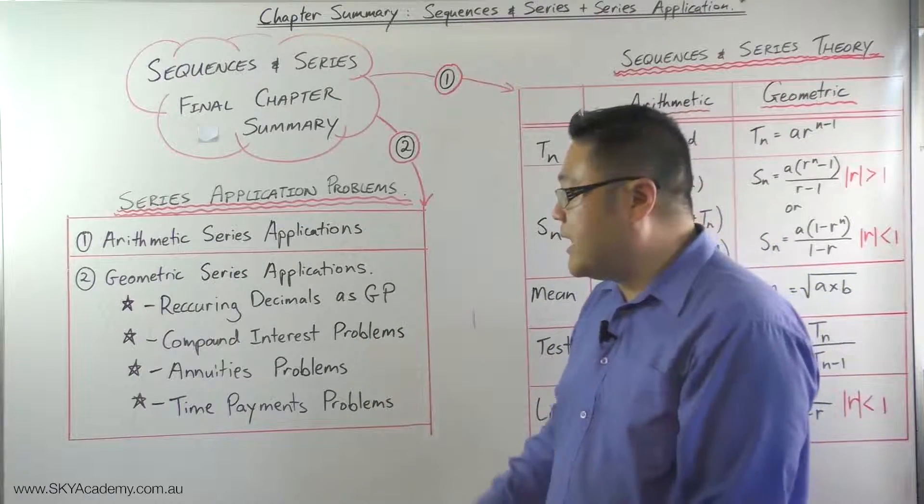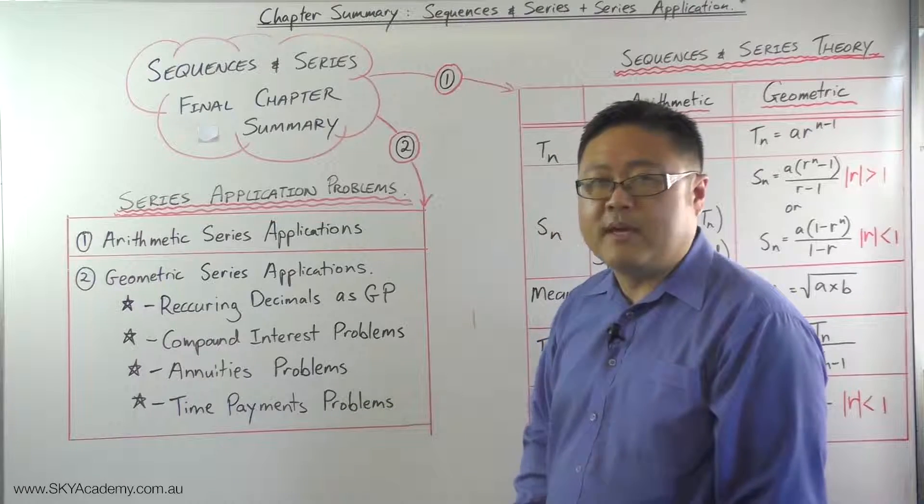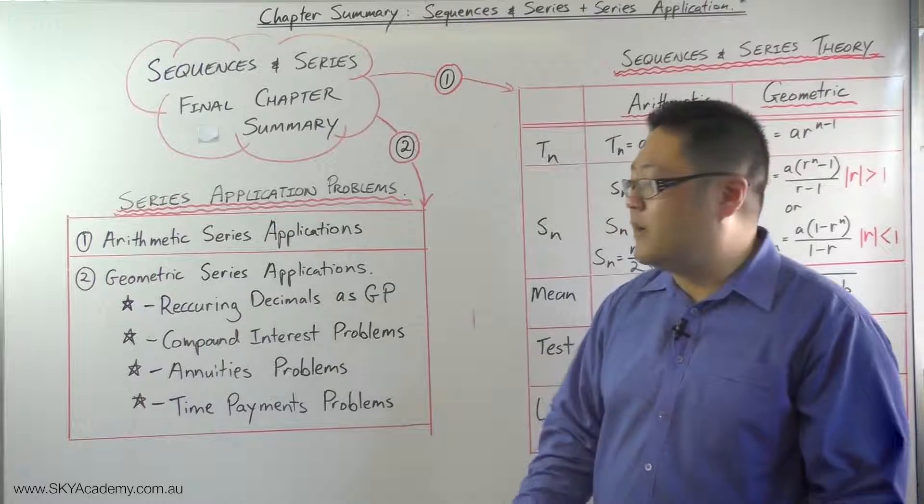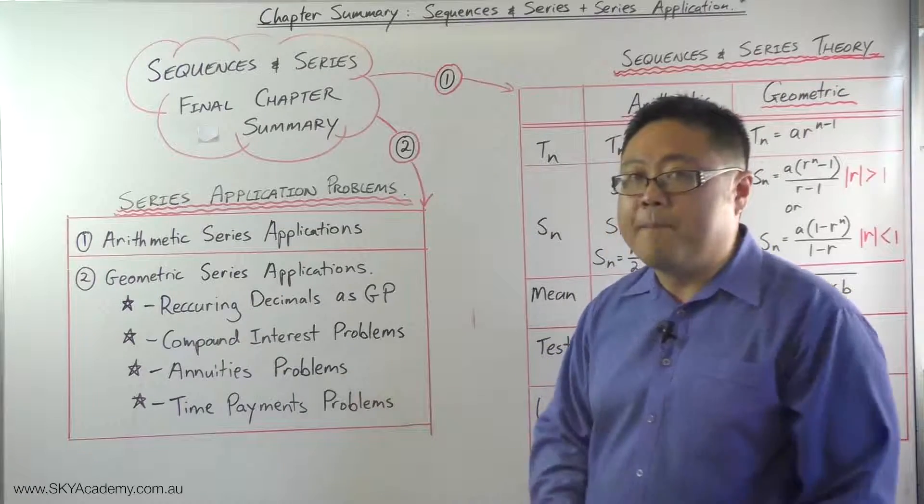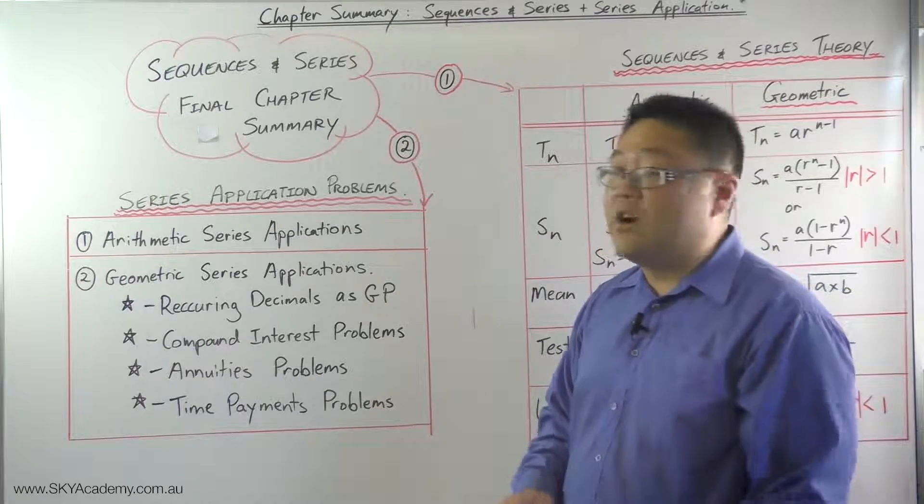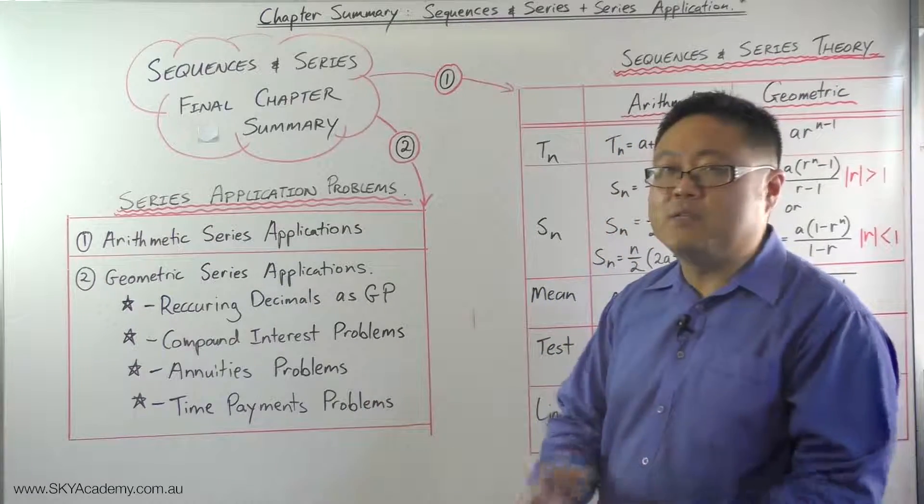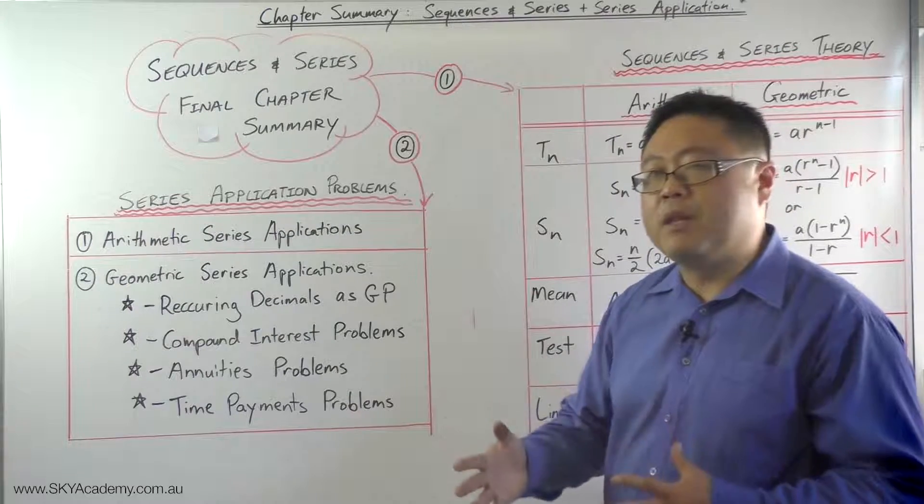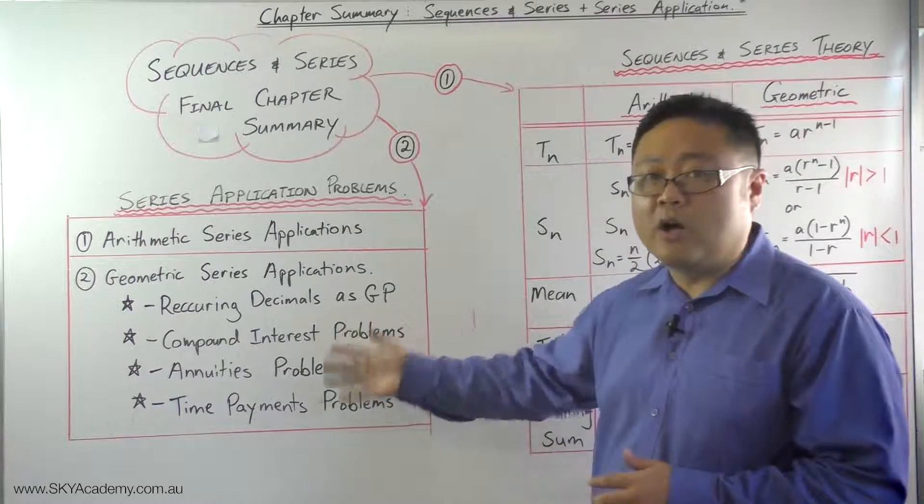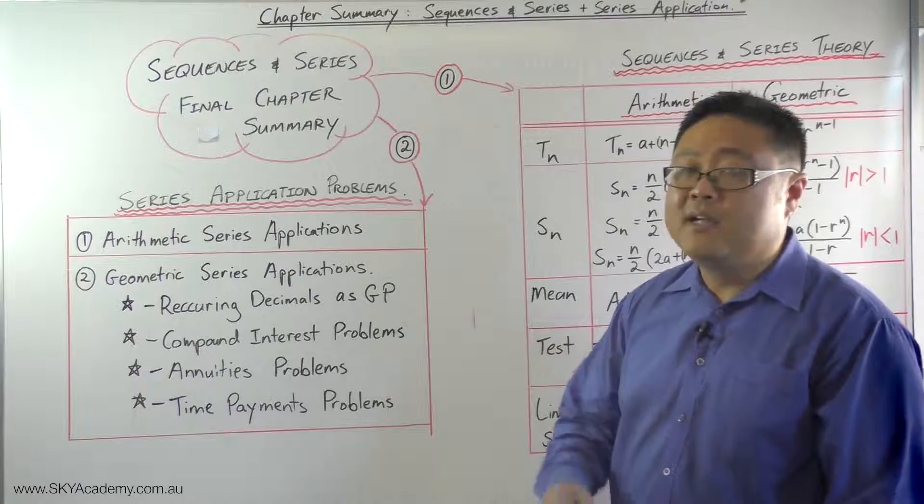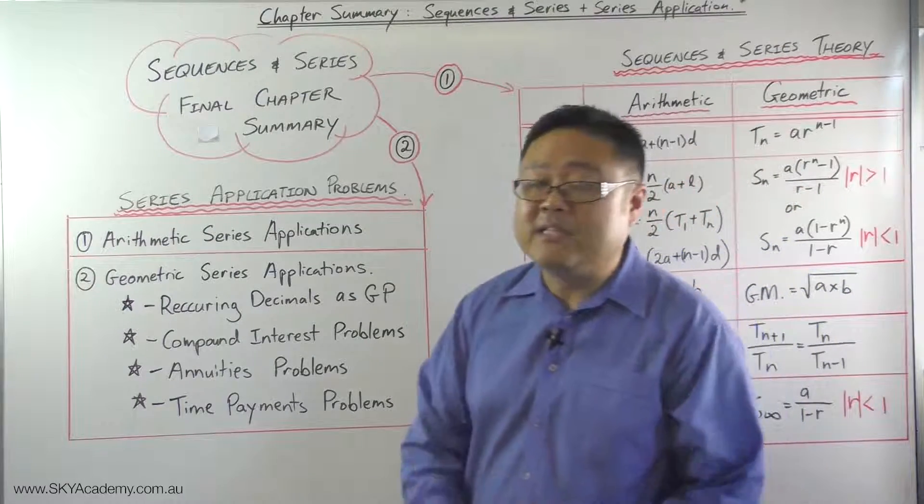Now this can be a little bit tricky. In fact, the annuities and the time payment section is oftentimes the worst done section. And not only that, it's the place where people get tricked, get tripped up a lot. There's a lot of potential for things to go wrong, for little miscalculations to take place.